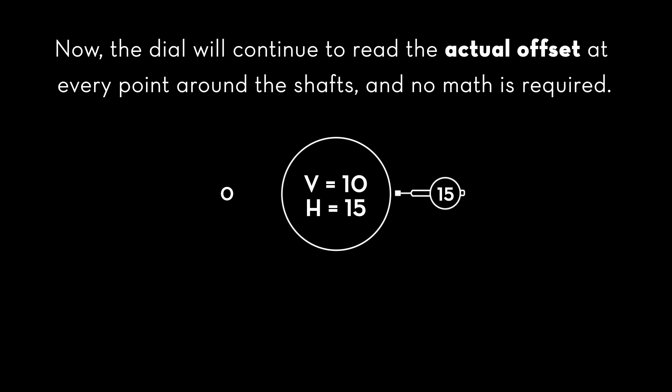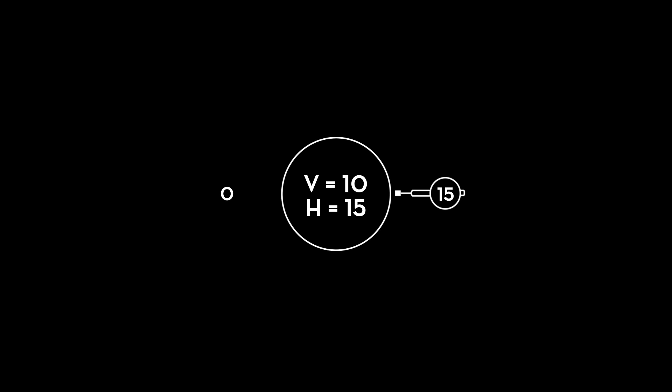Now, the dial will continue to read the actual offset at every point around the shafts, and no math is required. So, if we rotate the dial back to 9 o'clock, it no longer reads zero. It reads the actual horizontal offset, minus 15 mils.